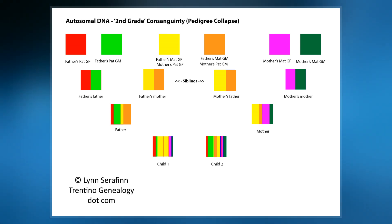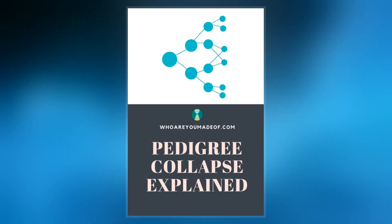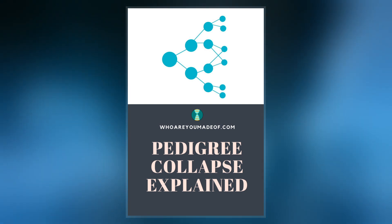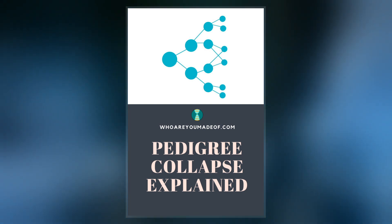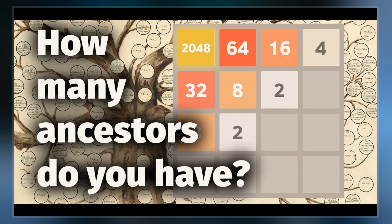For example, a single individual alive today would, over 30 generations going back to the high middle ages, have 2^30, or roughly a billion ancestors — more than the total world population at the time. This paradox is explained by shared ancestors, referred to as pedigree collapse.